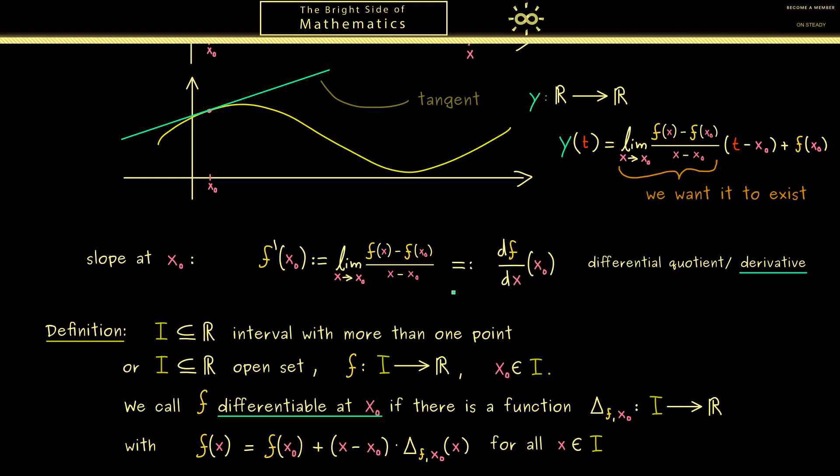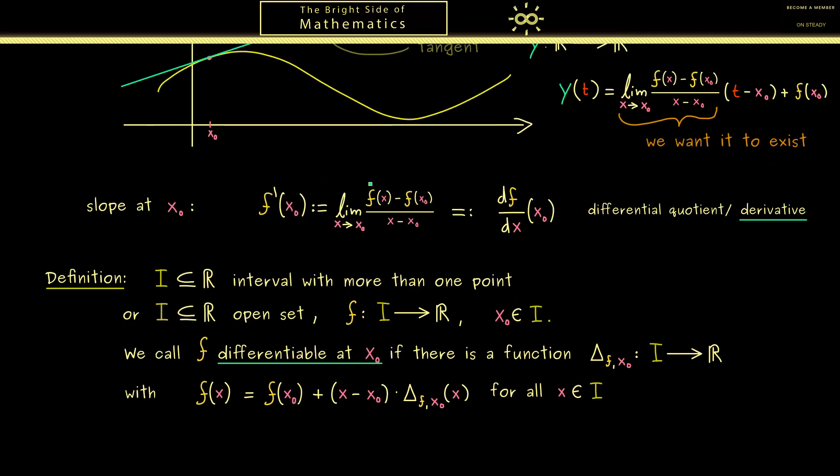Hence we also have to add that we can do this limit process. In fact this is now what we can translate into a continuity property of this delta function. So the function is continuous at the point x0 if and only if this limit exists. So you see in the case that we are familiar with the continuity property we can completely avoid writing this limit down. And what we get is the whole definition of f being differentiable at one given point.